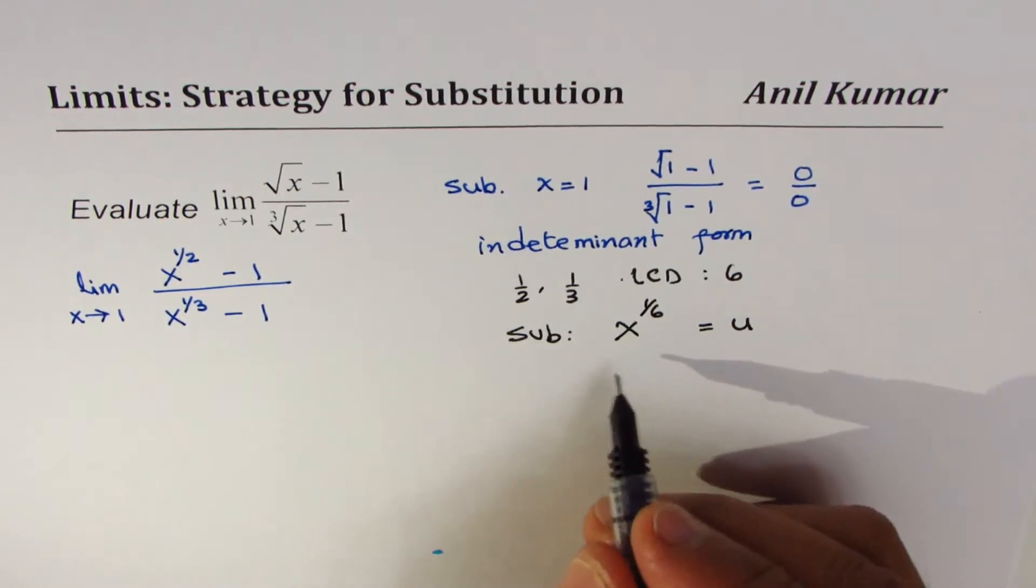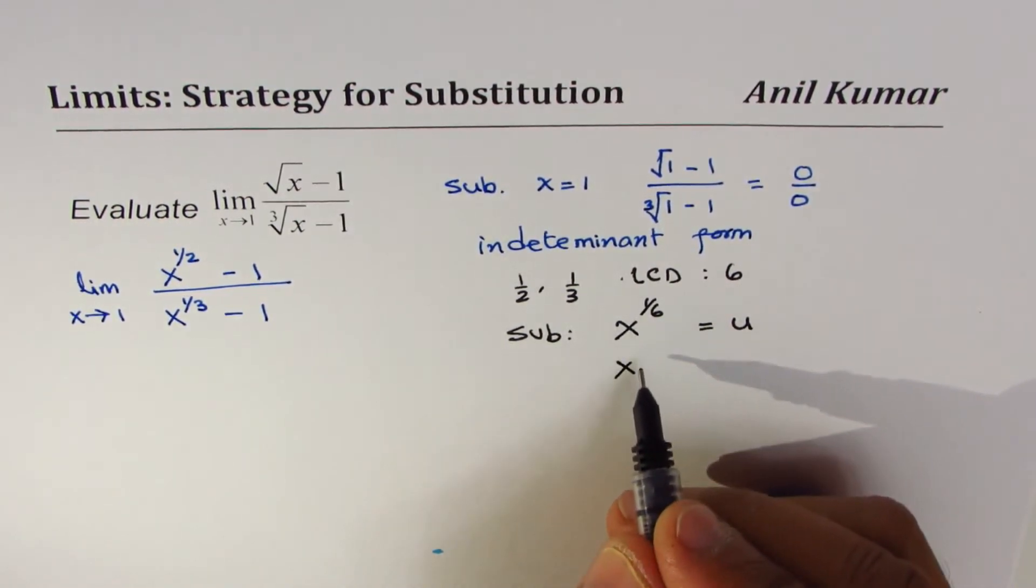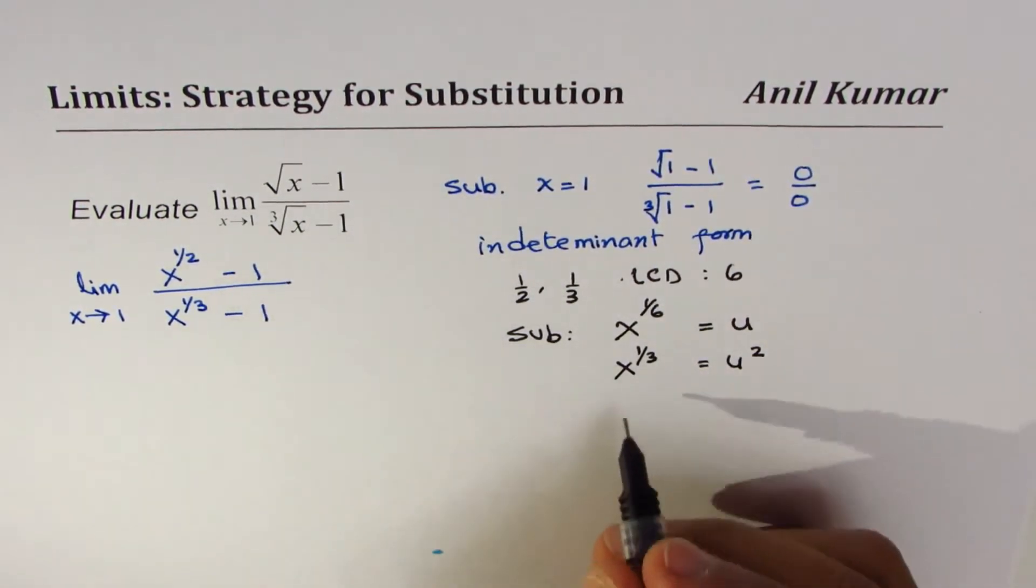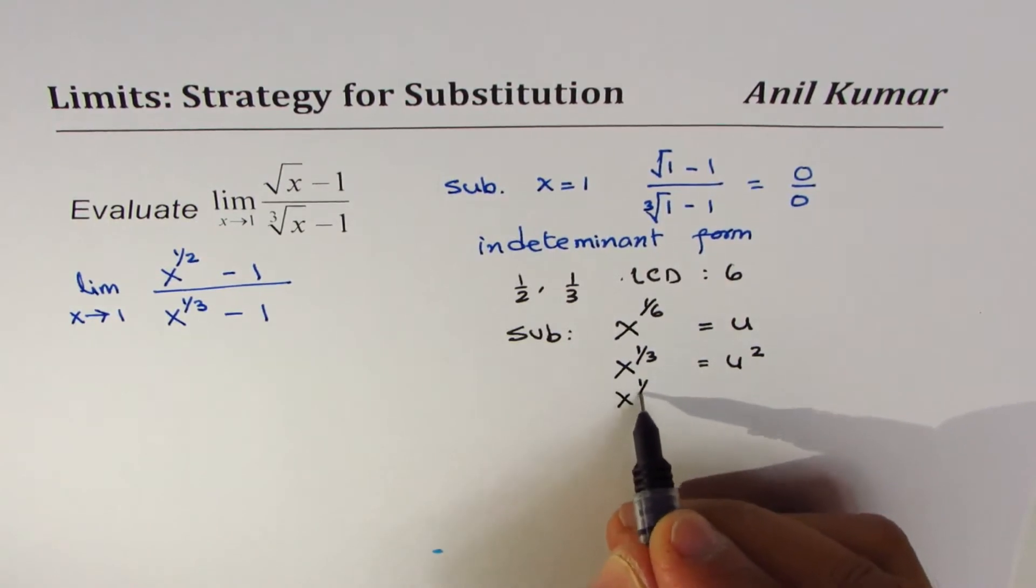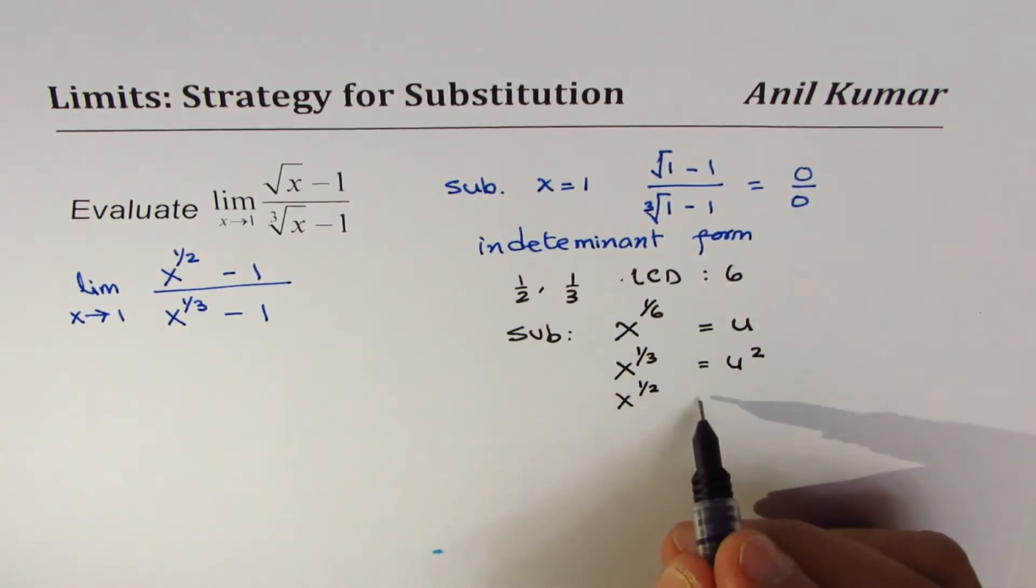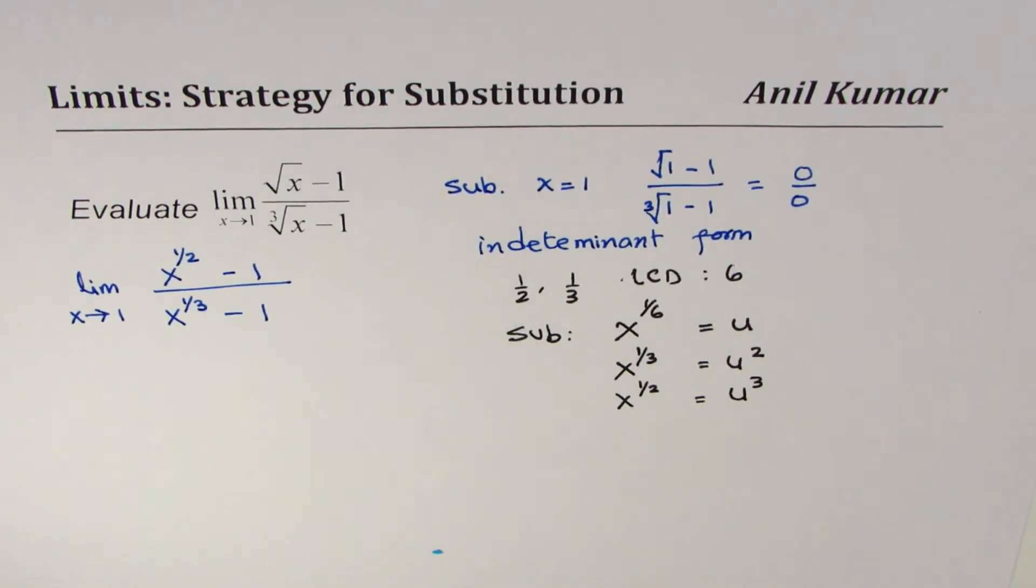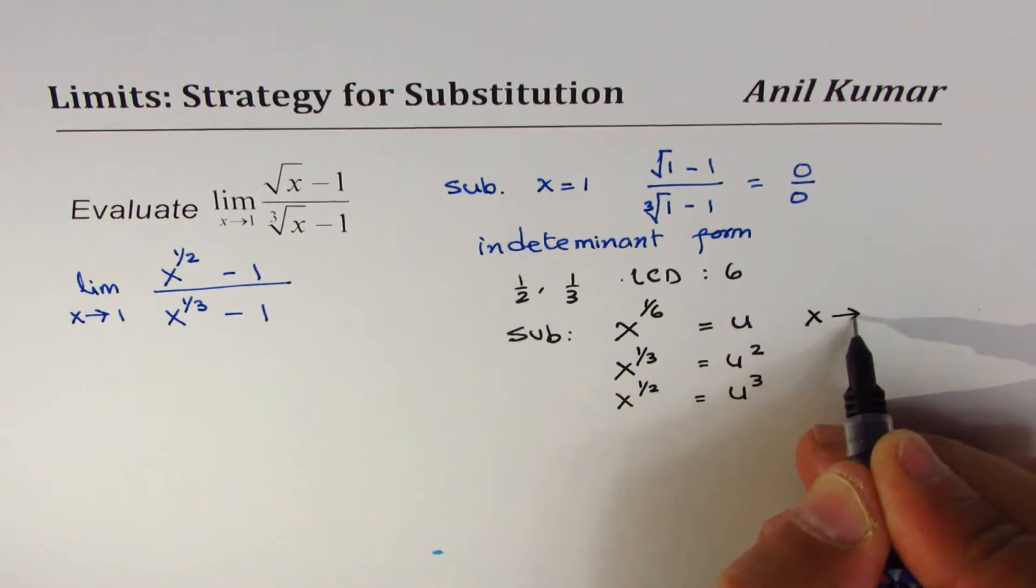You see that in that case, if x to the power of 1 over 6 is u, then x to the power of 1 over 3 will be u squared, and x to the power of half which is square root will be u cubed. You get the idea? Now as x approaches 1, u will approach 1 also, since x to the power of 1 over 6 also approaches 1.